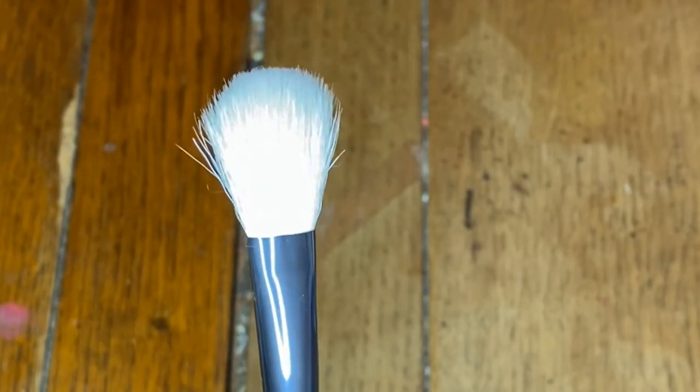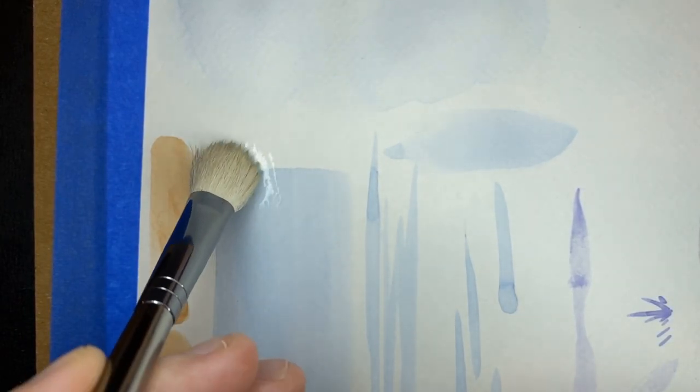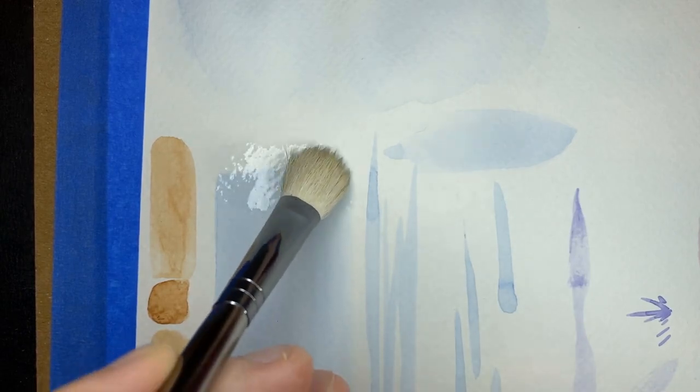Back to the mop brush, this one again can be used as a wash, but it's great for smoothing out harsh lines and blending. Be careful not to add too much water. You kind of want to brush away the noticeable lines.